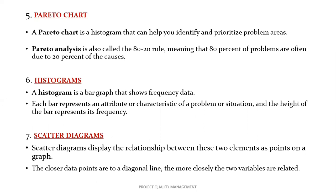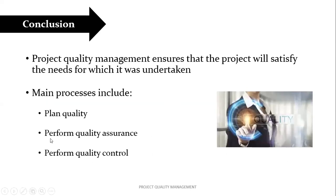The last tool is the scatter diagram. The scatter diagram in project quality management uses two variables: one called the independent variable, which is an input, and another called the dependent variable, which is an output. The scatter diagram displays the relationship between these two elements as points on a graph. In conclusion, project quality management ensures that the project will satisfy the needs for what it was undertaken, and the main processes include plan quality, perform quality assurance, and perform quality control.